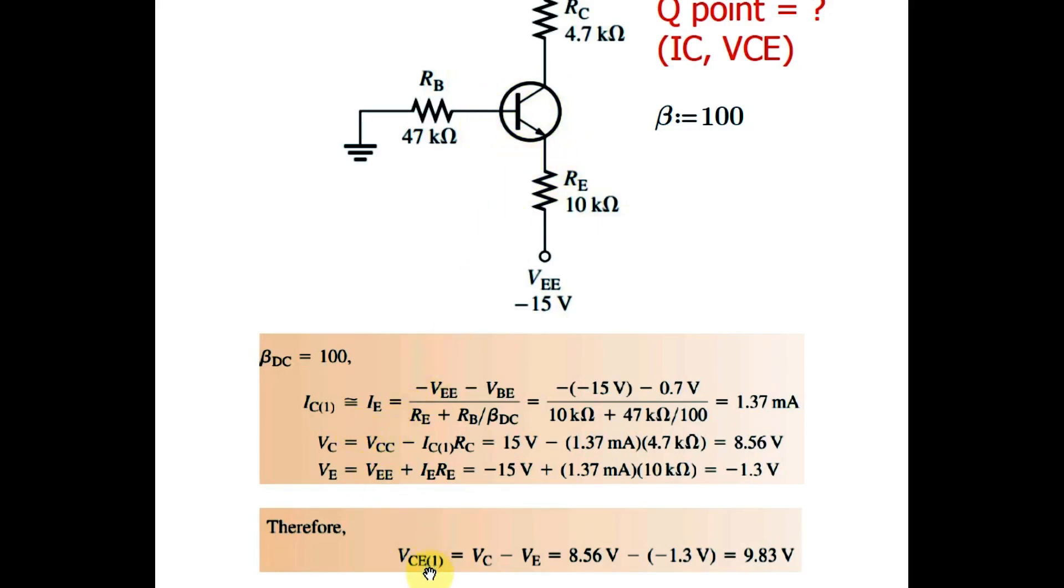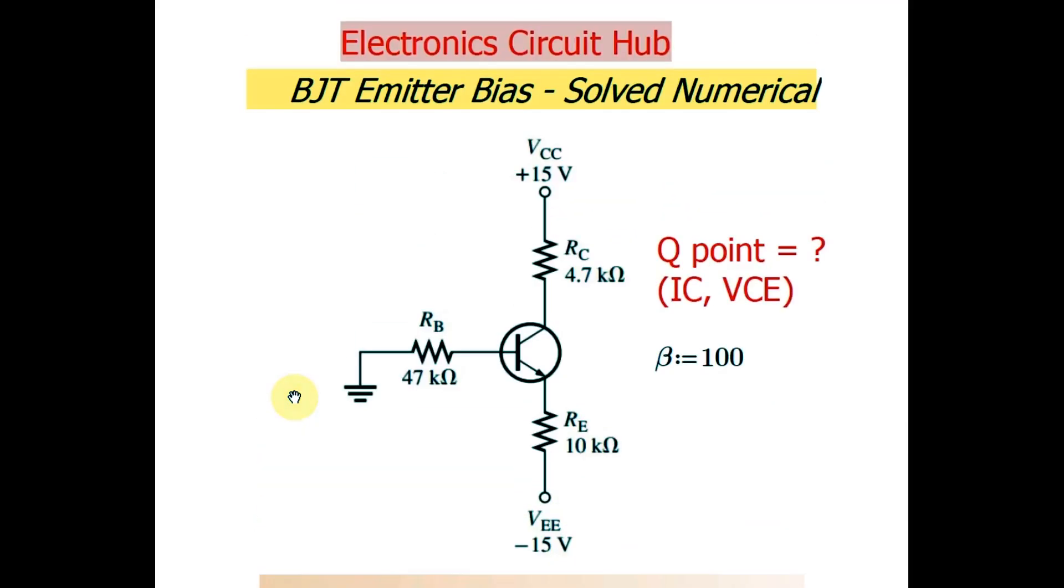Now you have your value of VCE and you have your value of IC. You can plot your DC operating point and you can find out your Q point. Hope you have understood how this circuit works, how emitter bias circuit works and how you can find the Q point or IC versus VCE value. If you have any question feel free to ask me in comment section. Thanks for watching this video.